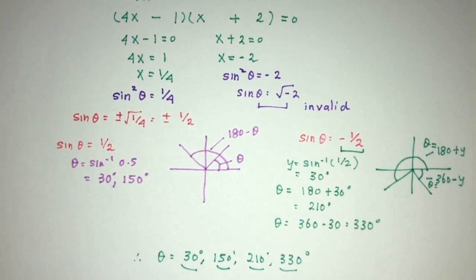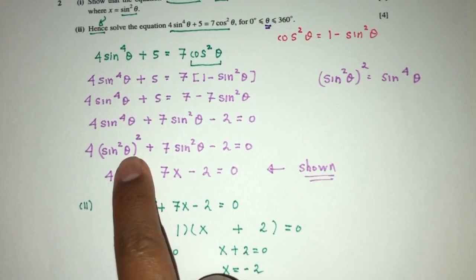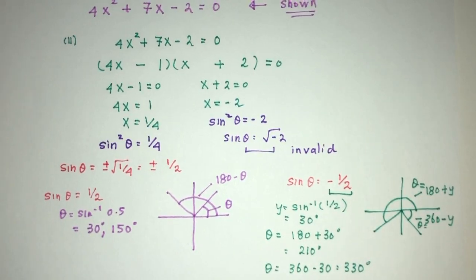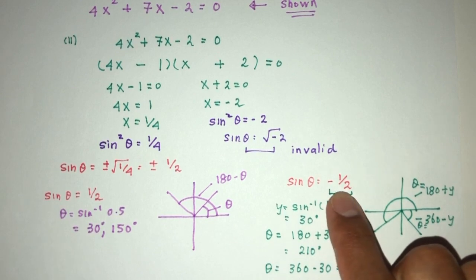I think the only tricky part here is maybe this. By the laws of indices, and here we have to factorize, and then maybe this. For some people, they might find this confusing. However, this method is pretty consistent.